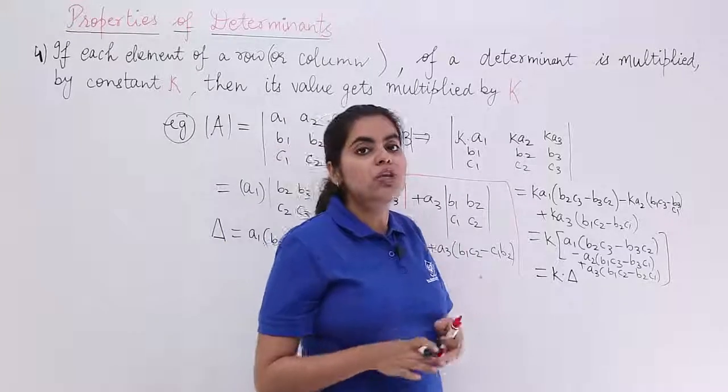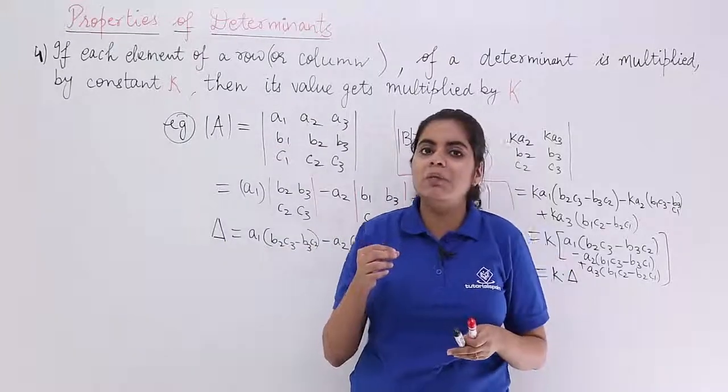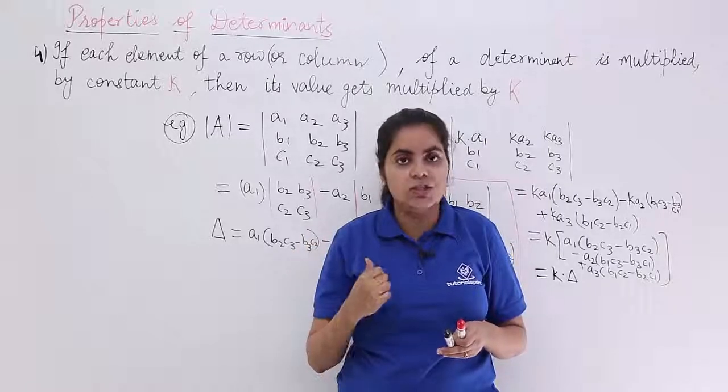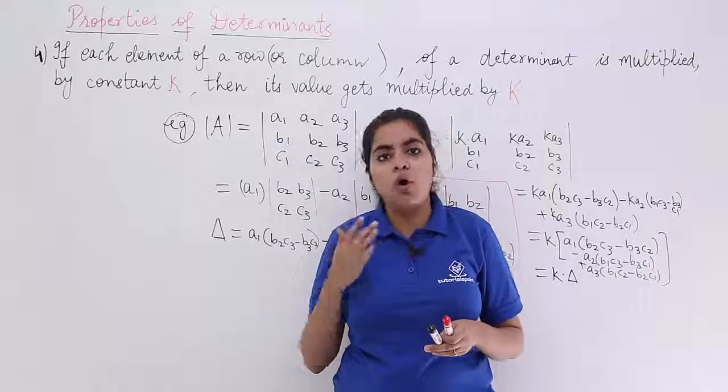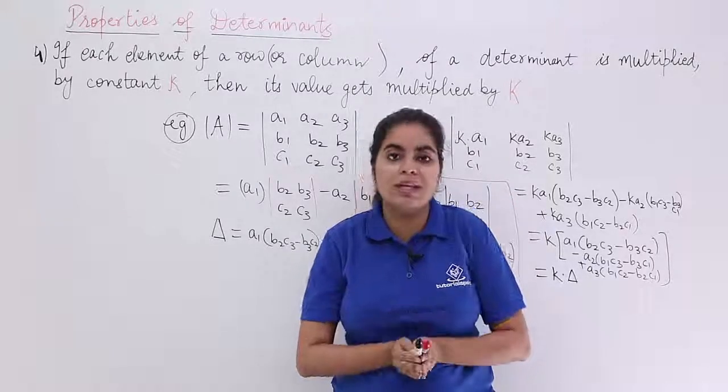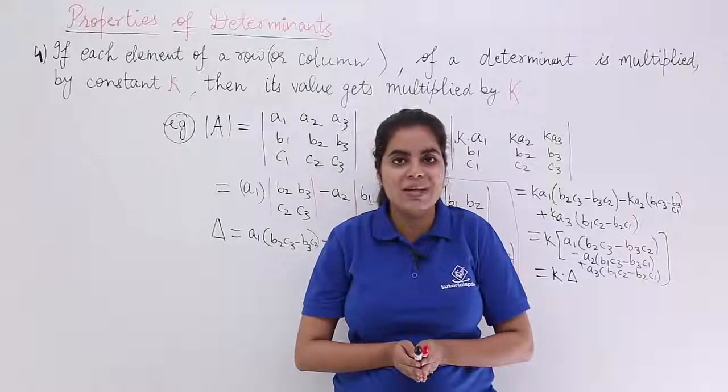So, in this video, we saw that the fourth property says that if you multiply each row elements by a constant K or any column, all entries by a constant, what happens? The value of determinant also gets multiplied by the same constant.